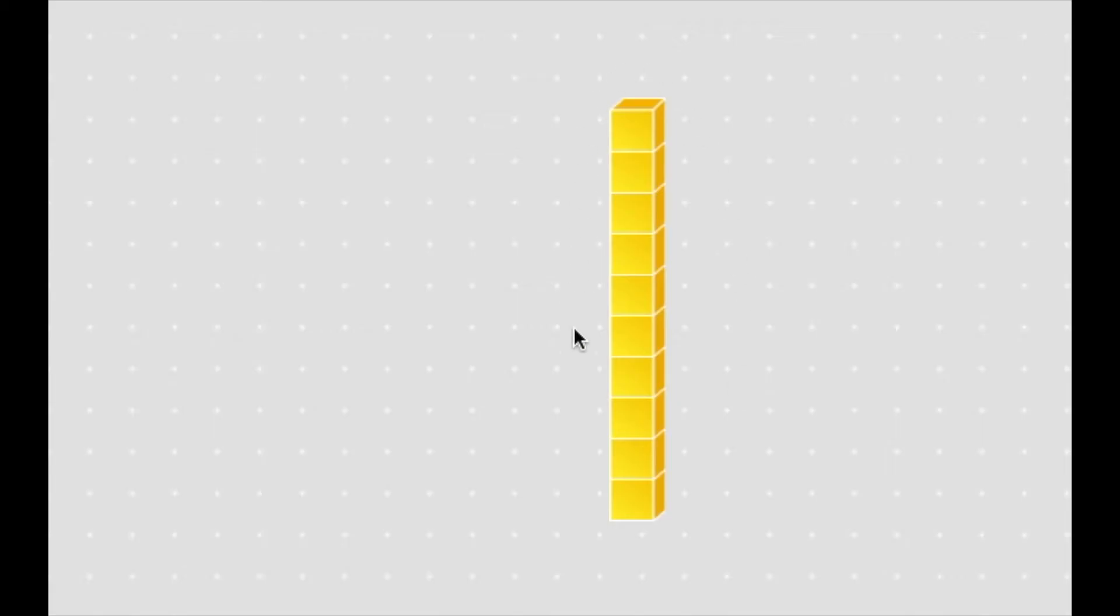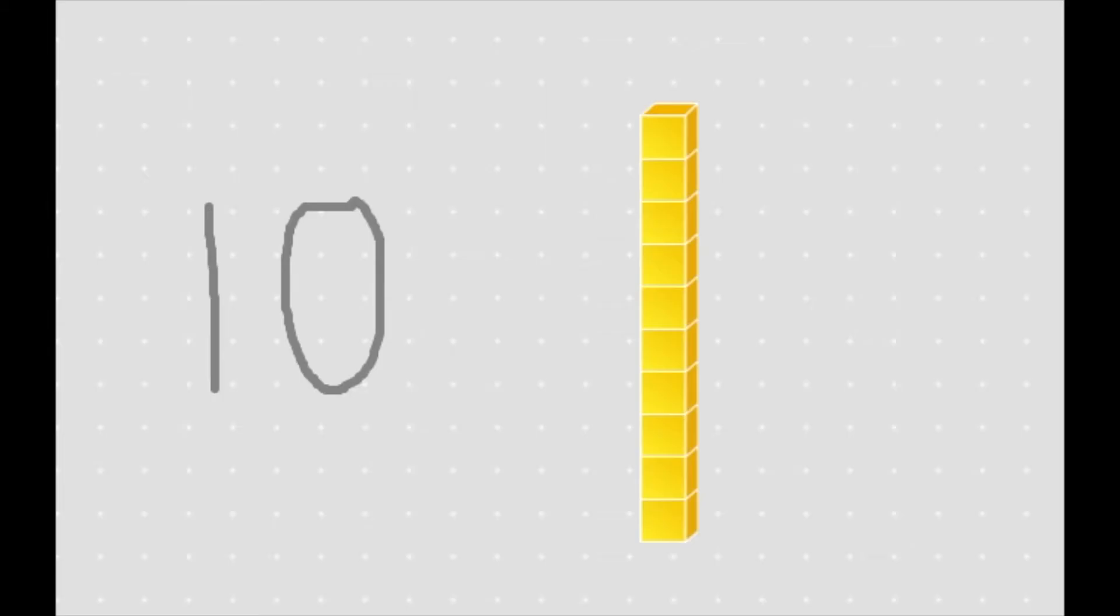This one long represents the number 10. We can practice place value by writing the number 10. To understand place value, I like to draw myself a little chart just like this. I write a T for tens place and then O for ones place. So we can write any two digit number in this chart to figure out which number is in the tens place and which number is in the ones place.